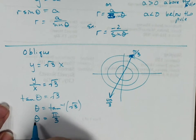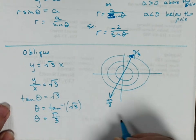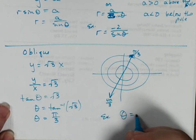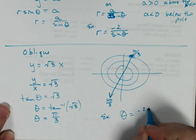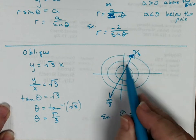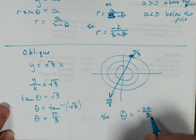So anytime you see theta equals, for example, if I had theta equals negative 2 pi over 3, then I would go to negative 2 pi over 3 and just draw my oblique line through the origin at that angle.